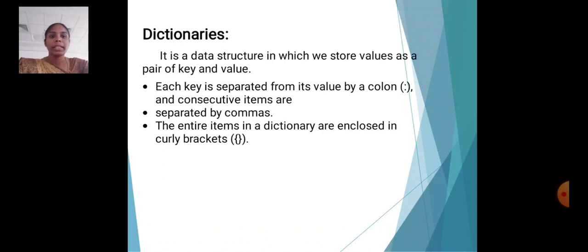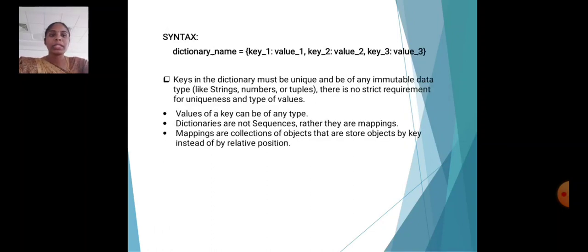Dictionary. It is a data structure in which we store values as a pair of key and value. Each key is separated from the value by a colon, and consecutive items are separated by commas. The entire items in a dictionary are enclosed in curly braces. Syntax: dictionary_name = {key1: value1, key2: value2, key3: value3}.